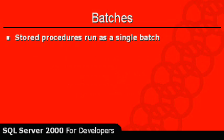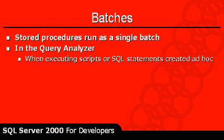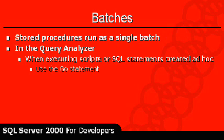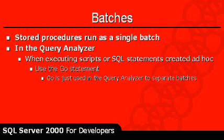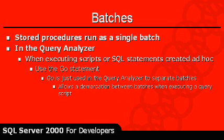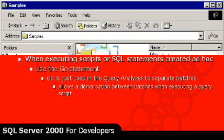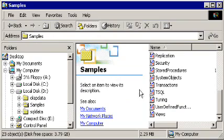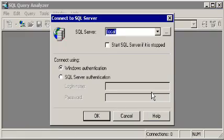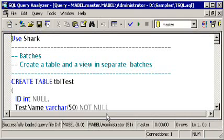Stored procedures, which we're going to look at in a separate section of this course, run as a single batch. In the query analyzer, when you execute scripts or SQL statements that you create on the fly, you can use the GO statement. This is not really part of Transact SQL — GO is something used in the query analyzer to separate batches and form a demarcation between separate batches when you execute a query script. I'll start here in Windows Explorer and double-click on a script file called tsql.sql, which will automatically open up query analyzer so we can look at some examples of using Transact SQL.